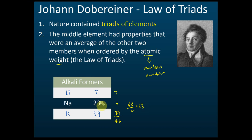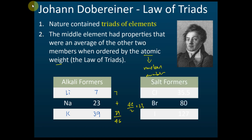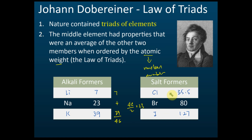The average of the atomic weights of the first and last elements equals the atomic weight of the middle one. Another example: chlorine (Cl) with atomic weight 35.5 and iodine (I) with atomic weight 127. If you calculate, you'll find that bromine's atomic weight is very close to the average of chlorine and iodine — not exactly the same, but very close. That is what Döbereiner meant by the Law of Triads.